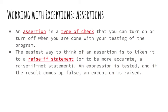As you can see, an assertion is a type of check that you can turn on or turn off when you are done with your testing of the program. The easiest way to think of an assertion is to liken it to a raise-if statement or, to be more accurate, a raise-if-not statement. An expression is tested, and if the result comes up false, an exception is raised.